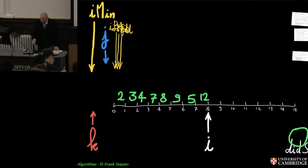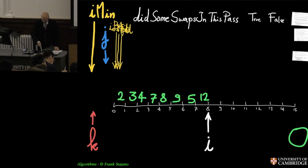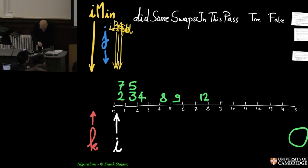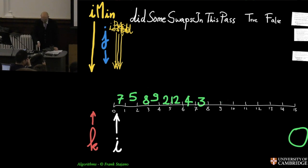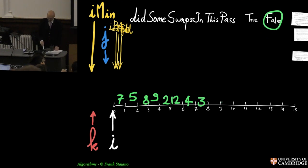And what you would do is you would keep yourself some boolean that says 'did some swaps in this pass', true or false. So I have my boolean here: did I do swaps in this pass? I haven't even started, so I go around and I say this one and its successor, are they in the right order? No, then I need to swap them, and as I do that I have to set my boolean to true.